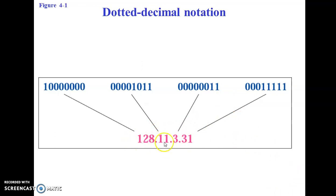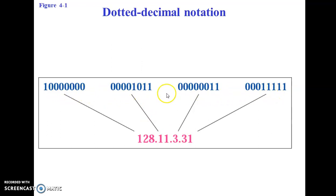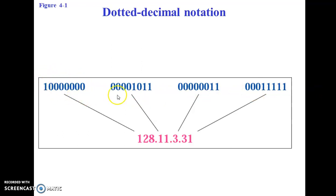The IP Address is being denoted in dotted decimal notation. Why is it said in such a way? Since there are dots between the decimal values, that's the reason they are being denoted as dotted decimal notation. The length is of 32 bits, and these 32 bits are being divided into 4 different groups of 8 bits, where 4 groups are formed and each group is of 8 bits.